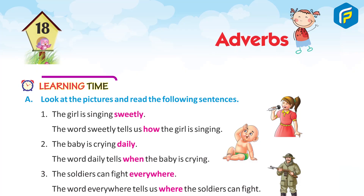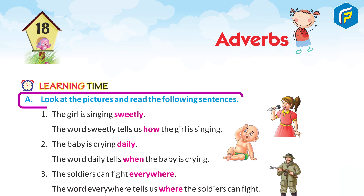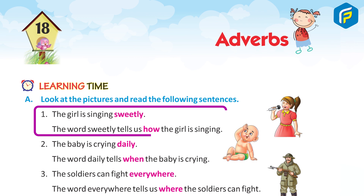Learning Time A. Look at the pictures and read the following sentences. 1. The girl is singing sweetly. The word sweetly tells us how the girl is singing.